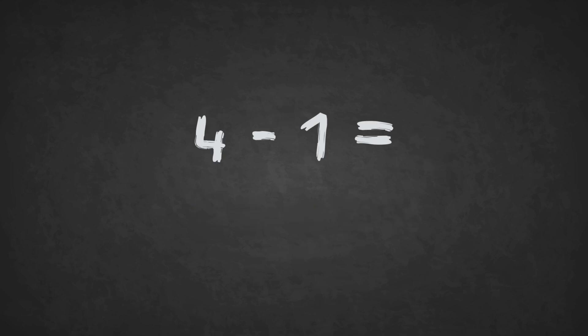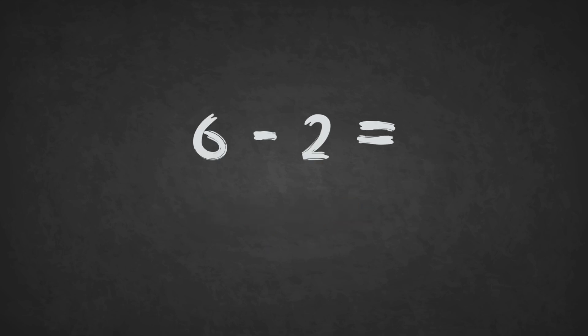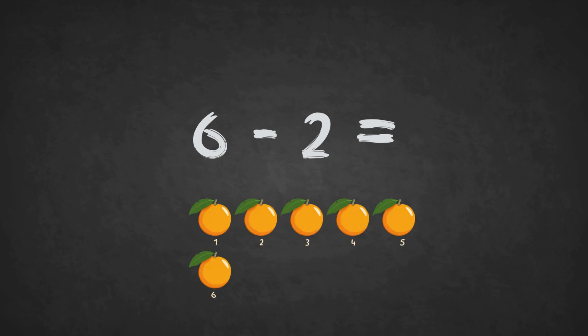4 minus 1 equals 1, 2, 3. The answer is 3. 6 minus 2 equals 1, 2, 3, 4. The answer is 4.